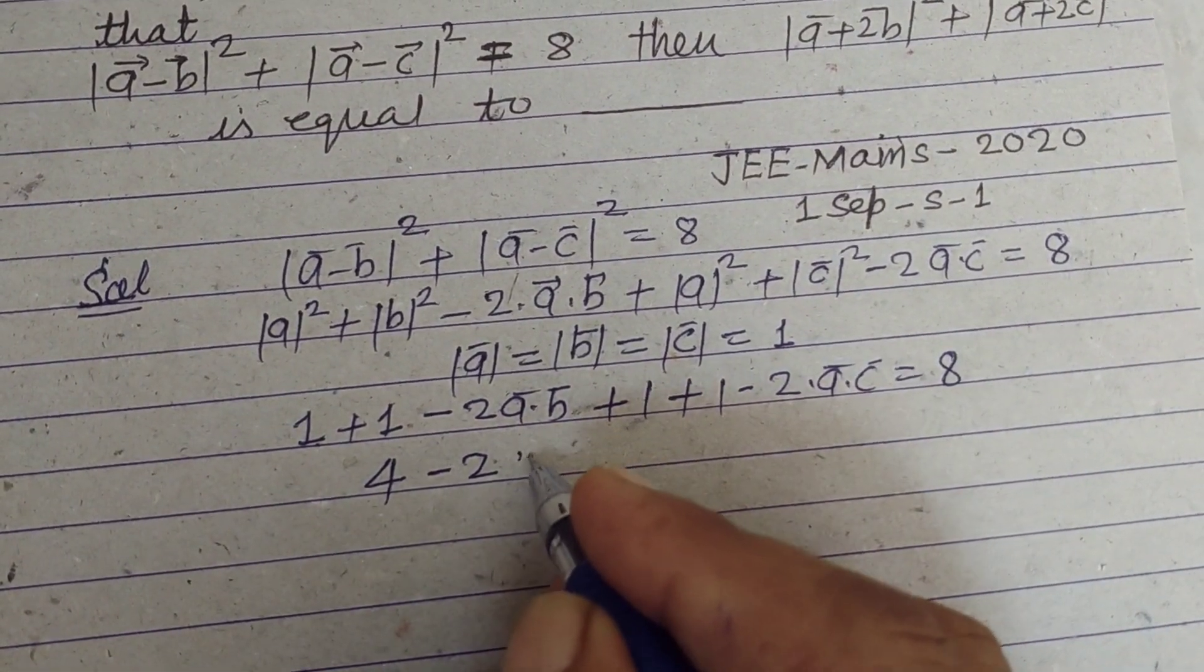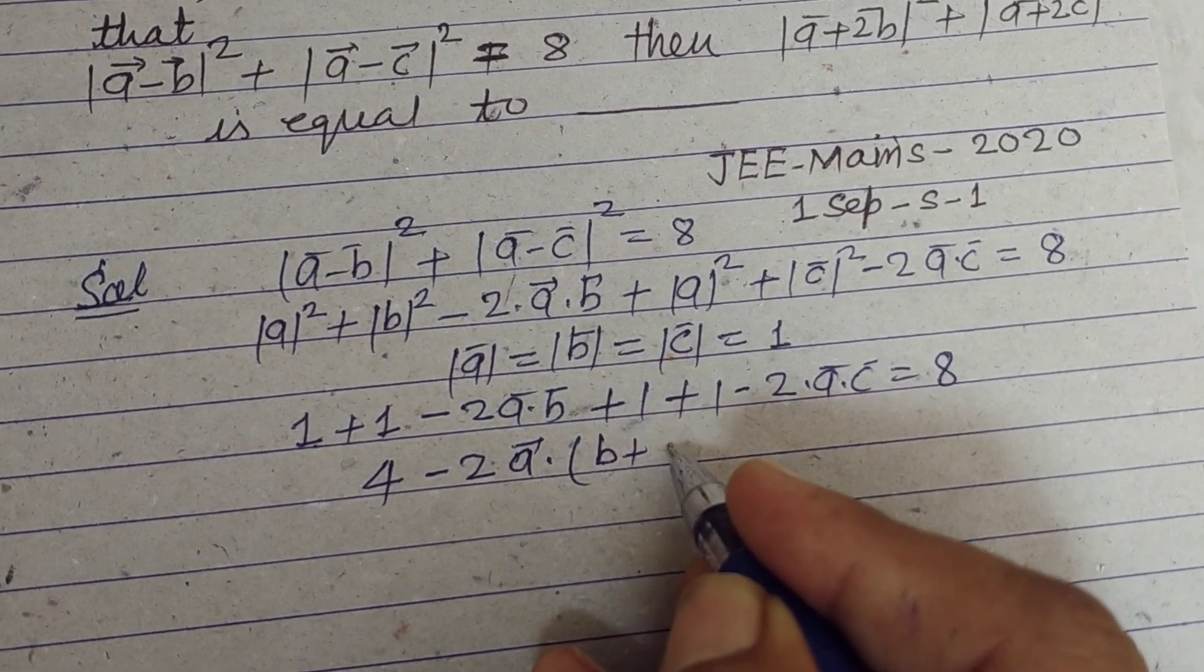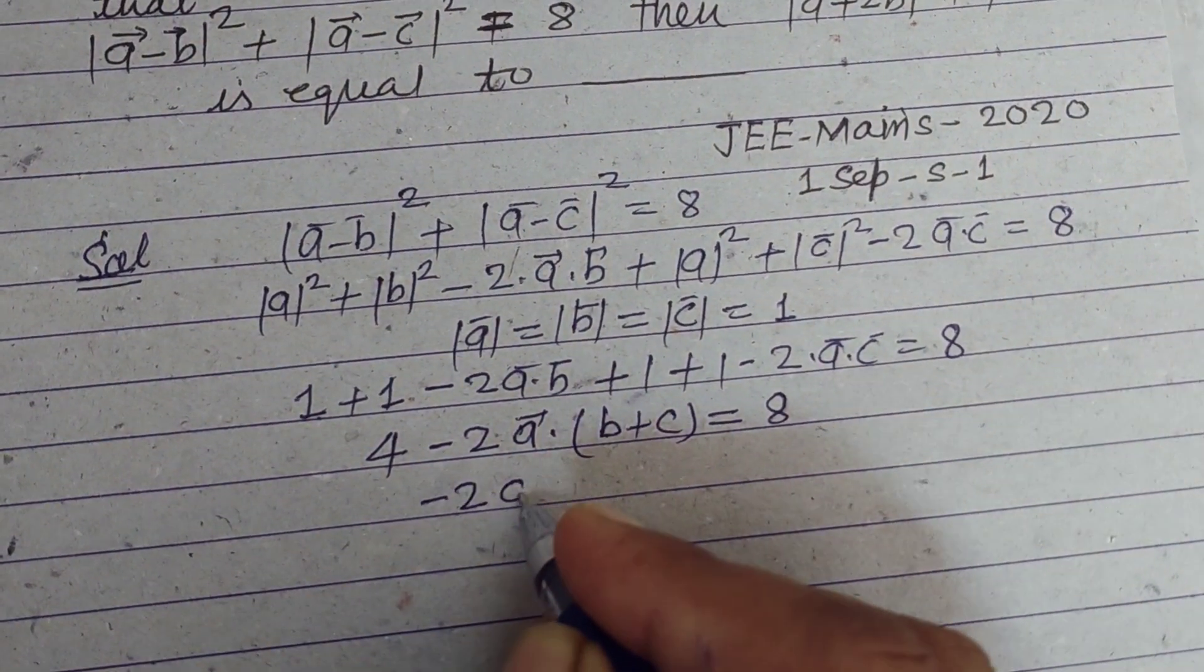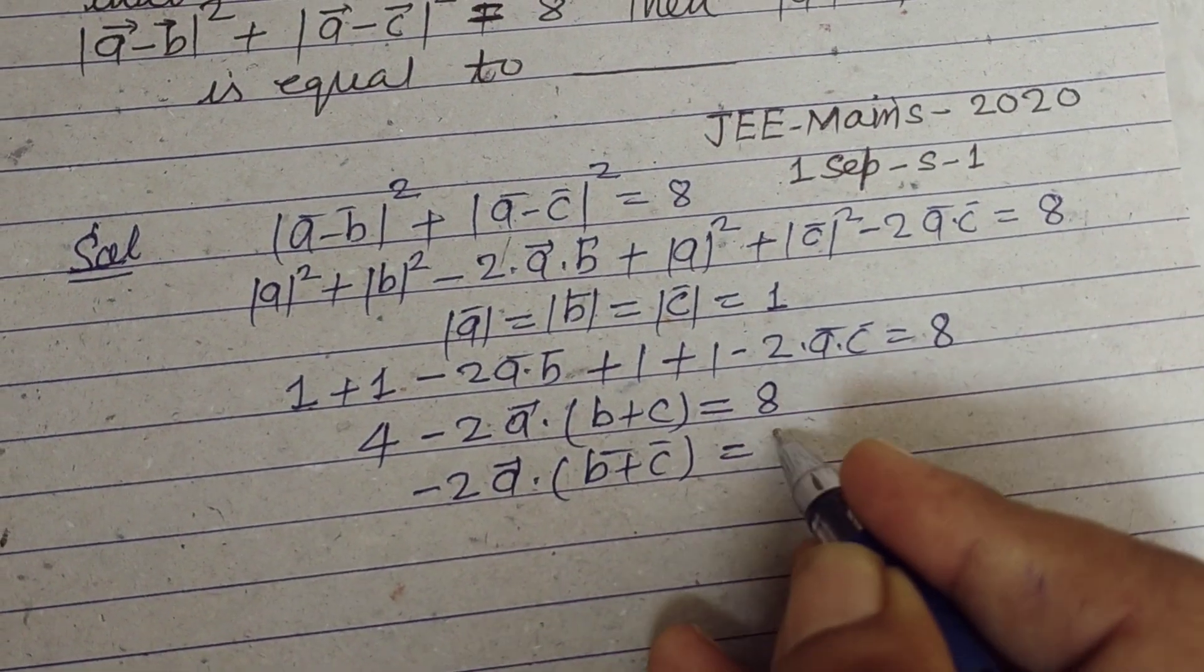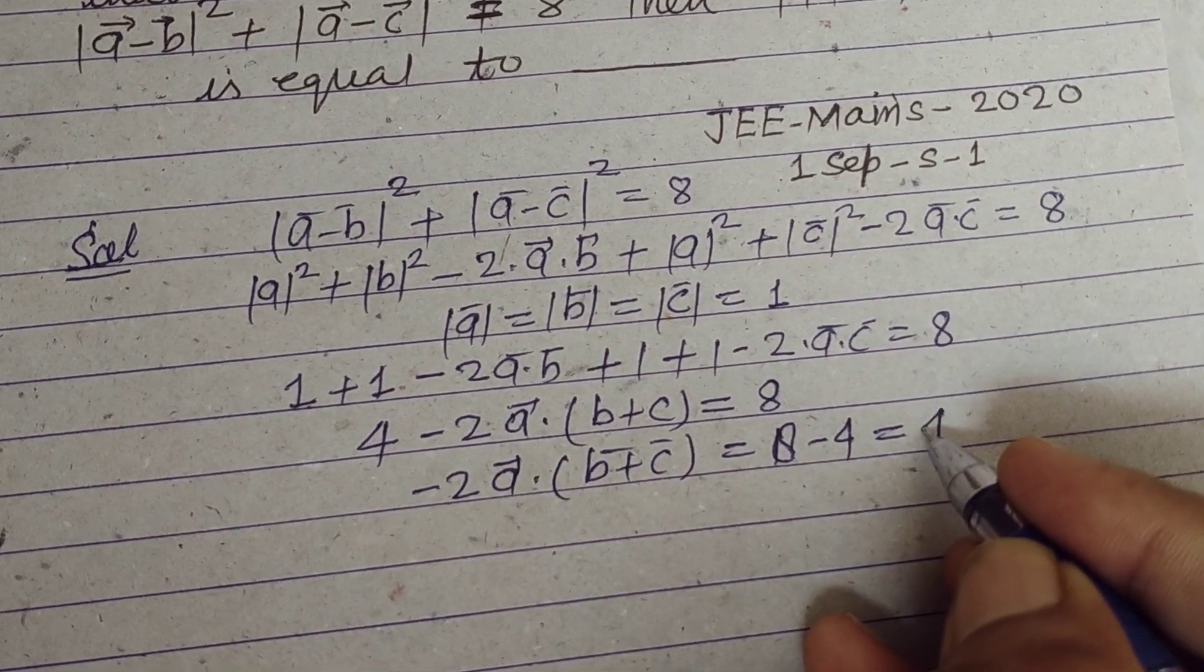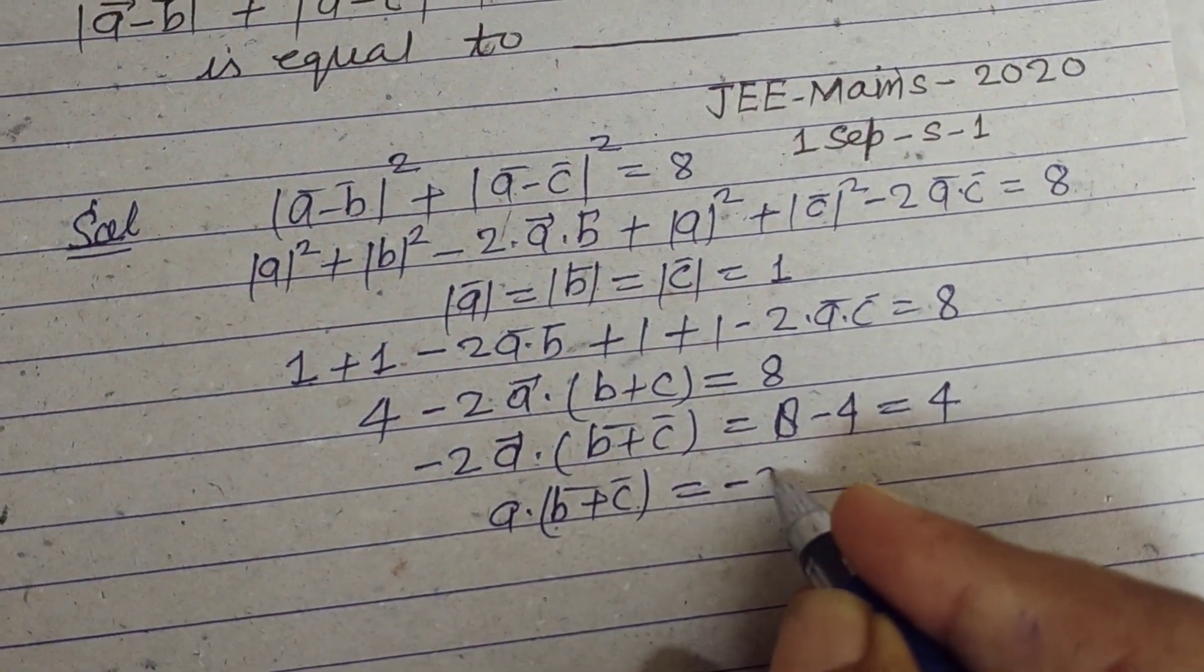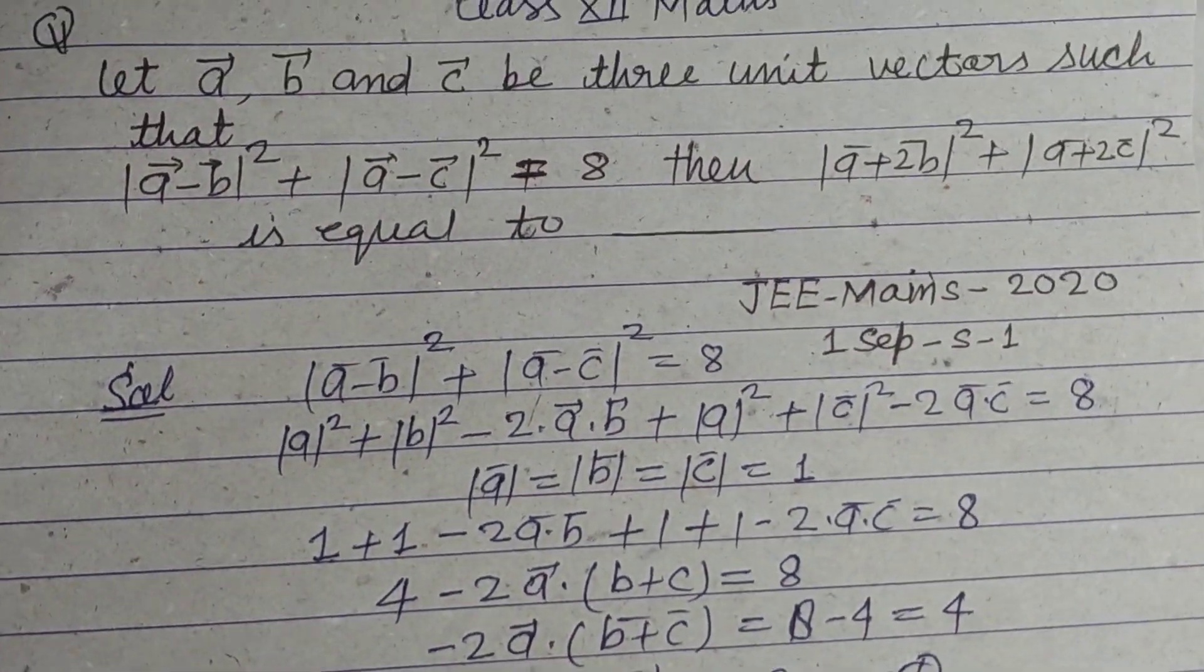So 2 times a dot (b plus c) equal to 8. We bring 4 towards right side, so minus 2 times a dot (b plus c) equal to 8 minus 4, so this is 4. By dividing minus 2, we got a dot (b plus c) equal to minus 2. So this is our first.